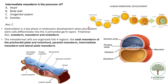When fertilization happens, there is rapid growth of the zygote from 2, 4, 8 cells — the morula, the blastula which is a bilaminar disc — and then forms the gastrula which is a trilaminar disc. So gastrulation is an important phase where the stem cells differentiate into three germ layers: the ectoderm, the mesoderm and the endoderm.